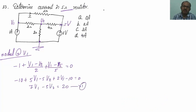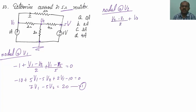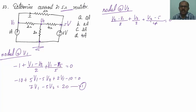Next let me apply nodal analysis at V2. I get: V2 minus V1 divided by 2, plus V2 divided by 2, plus V2 minus 5 divided by 4 equals 0. In the exam you should not take more than 2 minutes to solve this. Expanding: 2V2 minus 2V1 plus 2V2 plus V2 minus 5 equals 0.